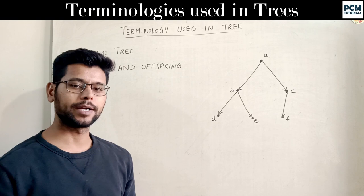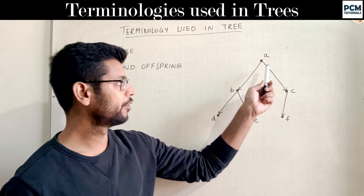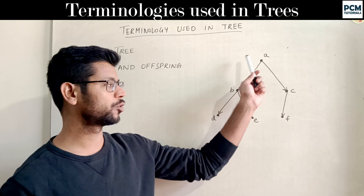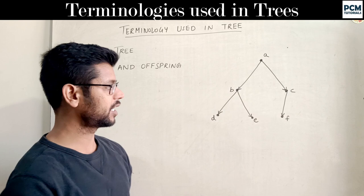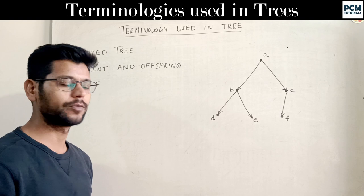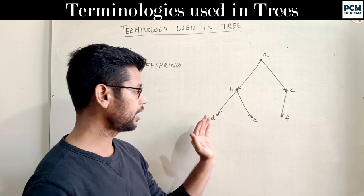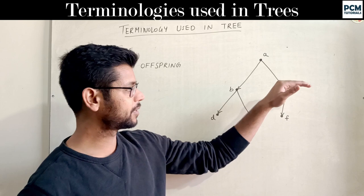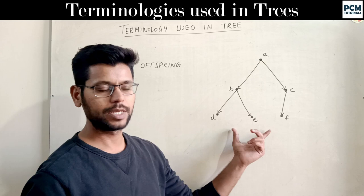Next is rooted tree. It is a directed tree in which you get a unique vertex with in-degree 0. Check: if B is in-degree 1, D is in-degree 1, E is in-degree 1, and F is in-degree 1, this is a rooted tree. You can see it like a family generation — grandparents, parents, and children.